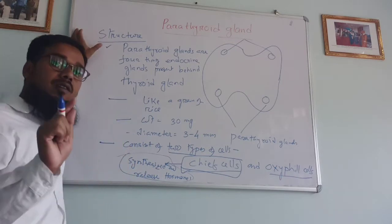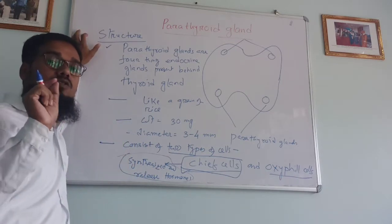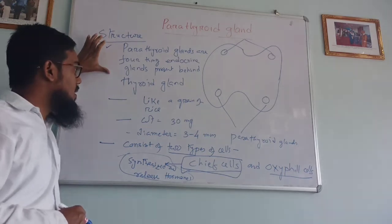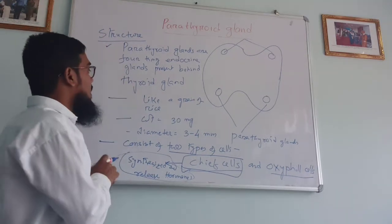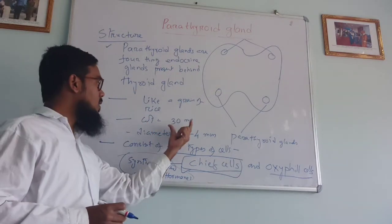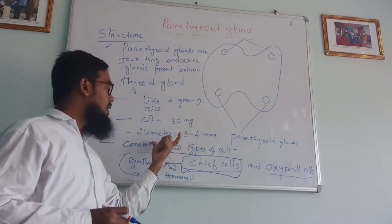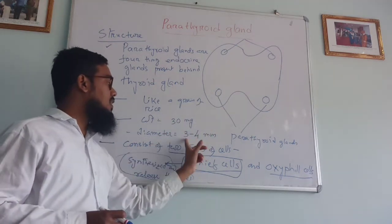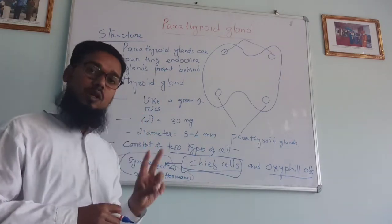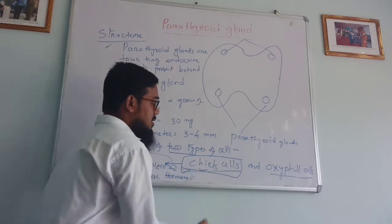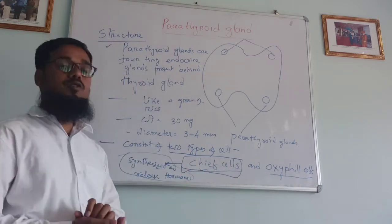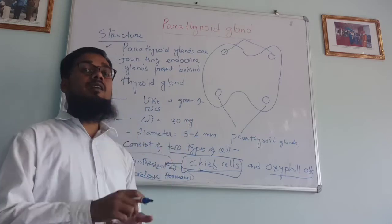So to revise: parathyroid glands are four small endocrine glands located behind our thyroid gland. They are like a grain of rice. Weight is very less, about 30 mg, and diameter is 3 to 4 mm. These parathyroid glands consist of two types of cells — chief cells and oxyphil cells — and chief cells are responsible for the synthesis and release of hormones.